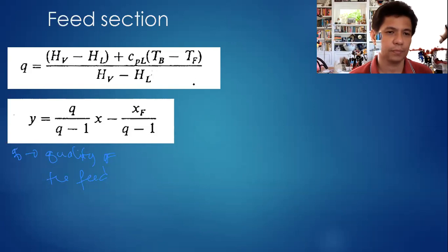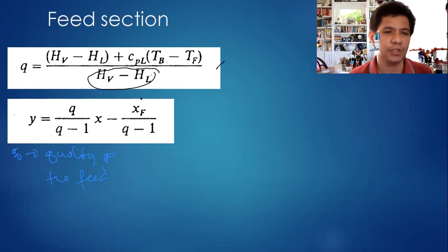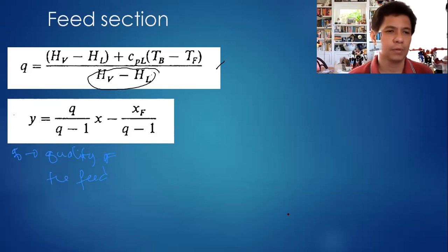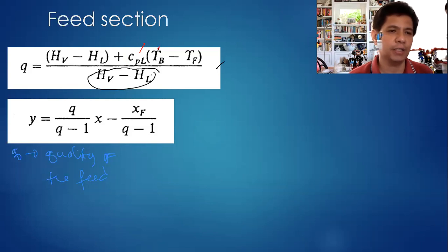In practice, the feed is most often sub-cooled liquid, saturated liquid, or boiling liquid. The practical equation for Q is: Q = [C_{pL}·(T_v - T_f) + ΔH_vap] / ΔH_vap, where (H_v - H_L) = ΔH_vap is the enthalpy of vaporization, C_{pL} is the heat capacity of the feed, T_v is the boiling point, and T_f is the temperature of the feed.